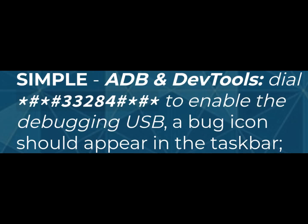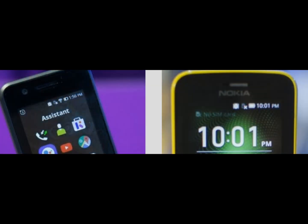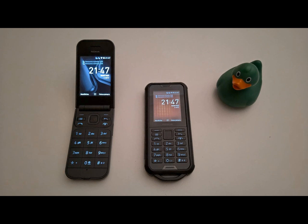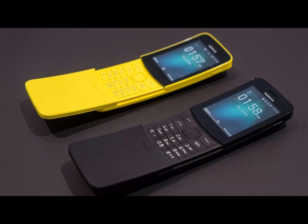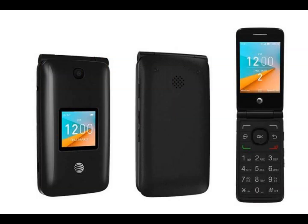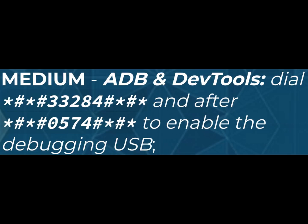Simple — adbm dev tools: dial *#33284## to enable USB debugging. A bug icon should appear in the taskbar. Devices in this category include the Nokia 2720 Flip, 800 Tough and 8110 4G, Mountain Smart S3G sold in Africa, and Alcatel Singlar Flip 2 in the United States.